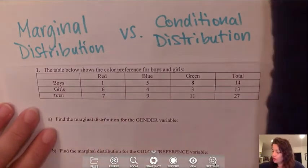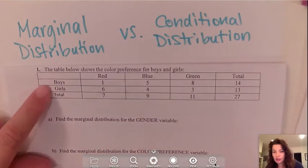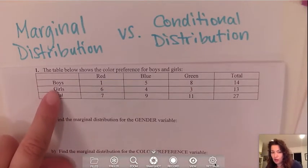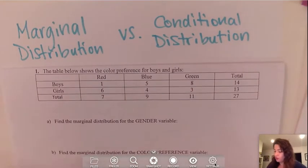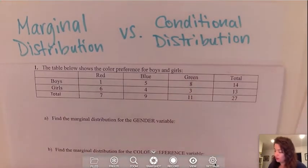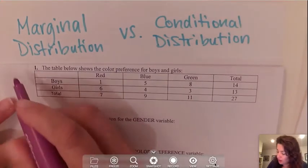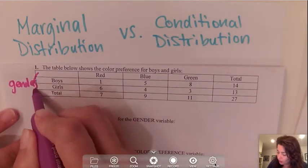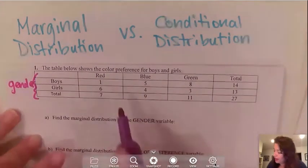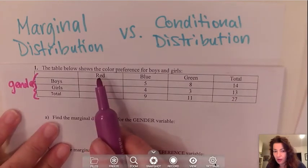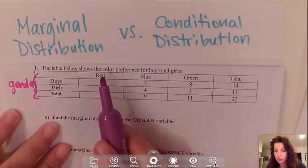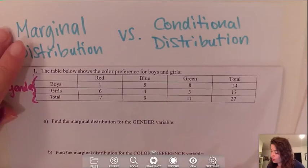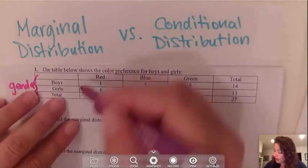If you look at the rows we have boys and girls, so we can call this the gender variable. Then we have on our columns red, blue, and green, so we can call that our color preference.